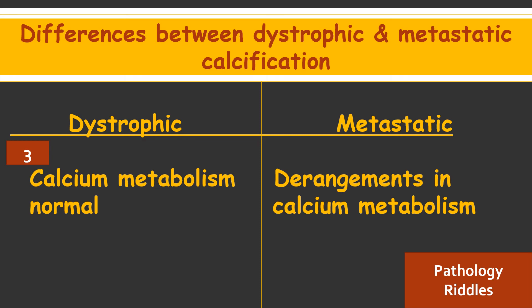The causes of derangement or the causes of hypercalcemia in metastatic calcification could be vitamin D-related disorders, hyperparathyroidism, renal failure, and others.